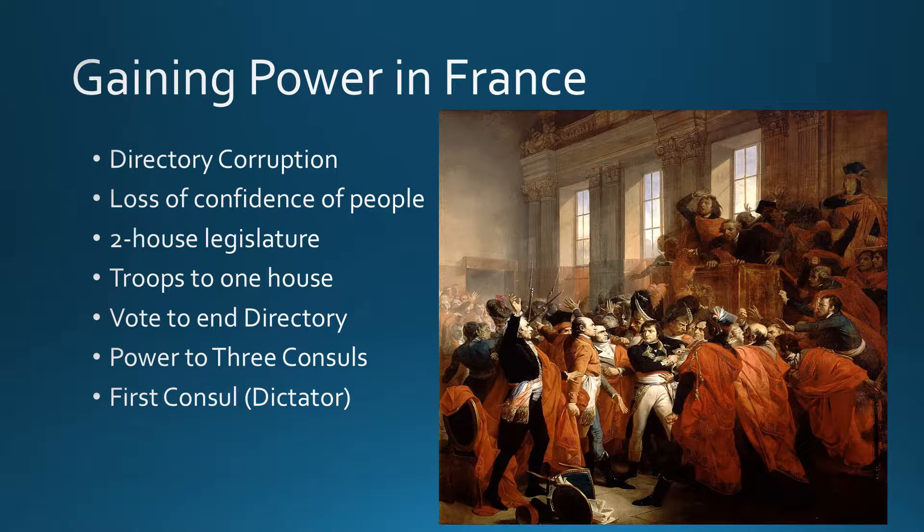Think about it — only about 10 years into the revolution, we've gone from absolute monarchy to the National Assembly, Legislative Assembly, National Convention, the Directory, and now 10 years later we're basically back to an absolute ruler. The way Napoleon seizes power is known as a coup, or coup d'état — when somebody seizes power through a military-type uprising, which is exactly what Napoleon does.